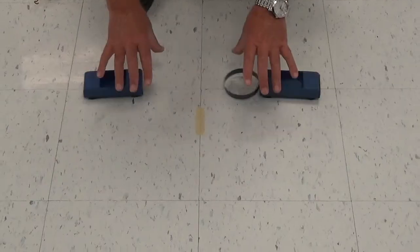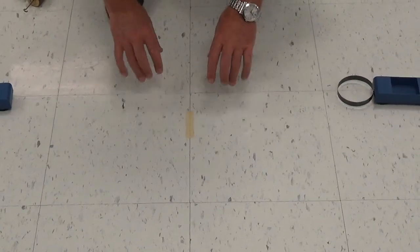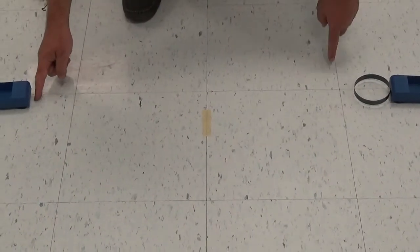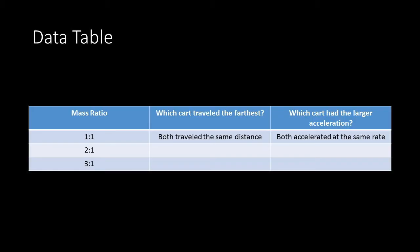In trial one, we have lab carts compressed of equal mass. Which cart traveled the farthest? Well, both traveled the same distance. Which had the larger acceleration? Well, both accelerated at the same rate.